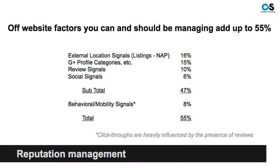Sixteen percent of the determination about whether you show up is NAP data — your name, address, and phone number. You show up in hundreds of places across the web; we track about 300 with our rep man service, including online directories, local search engines like Google+, and agency locators for your insurance companies. It's really important that you claim your Google profile, get the right categories, and get your information in there. Review signals and social signals are important credibility factors, and the behavior on mobile is heavily influenced by the presence of reviews — so you have to count reviews twice.